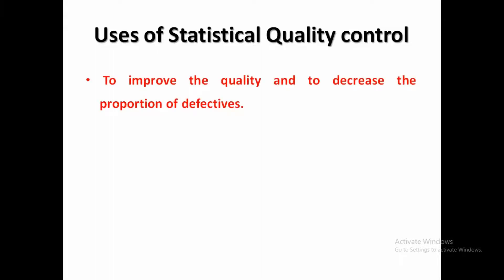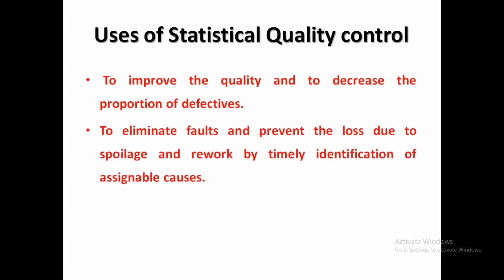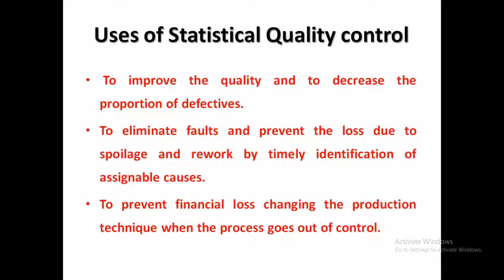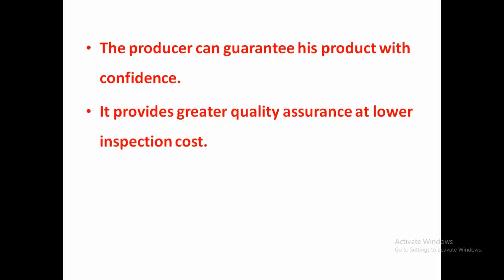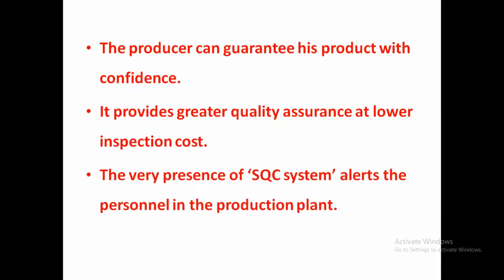The advantages of using Statistical Quality Control methods in production include: improving quality and decreasing the proportion of defects; eliminating faults and preventing loss due to spoilage by timely identification of assignable causes; reducing financial loss by changing the production technique when the process goes out of control; the producer can guarantee the product with confidence; it provides greater quality assurance at lower inspection cost; and the very presence of an SQC system alerts personnel in the production plant.